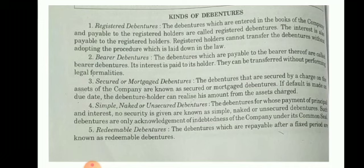Redeemable debentures are issued with a fixed rate and a fixed time — for example, they are redeemed after 5 years. Redeemed means the company pays back the principal. For example, if debentures were purchased at a 6% rate with a face value of ₹10, when the company pays back, the market price might be ₹12, meaning the investor could profit.